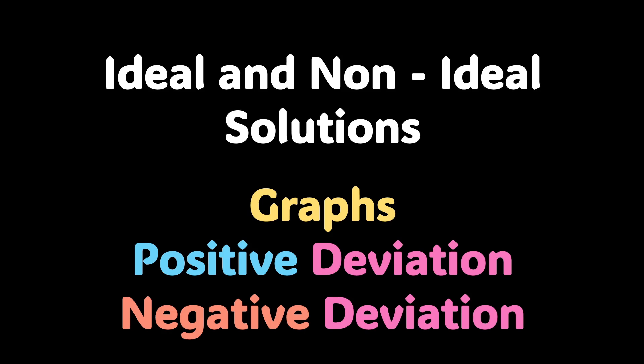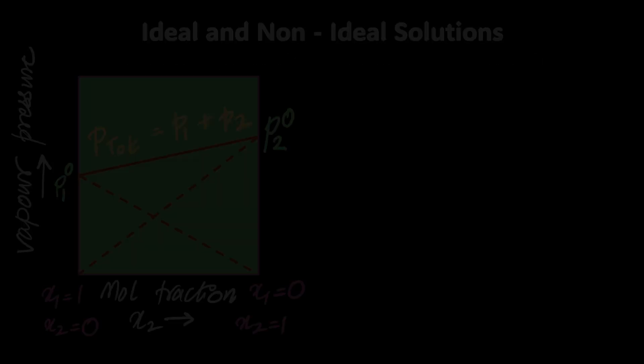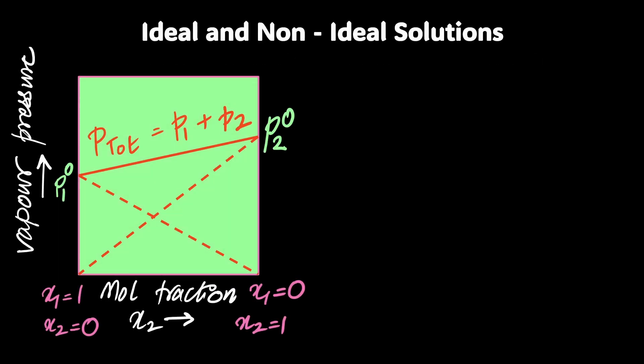By the end of this video you'll be able to tell the difference between ideal and non-ideal solutions, look at the two different types of non-ideal solutions that have positive and negative deviation, and in extreme cases also form azeotropes. What on earth is that? Let's find out.